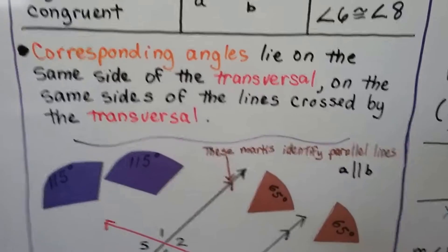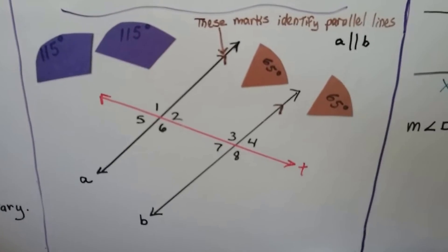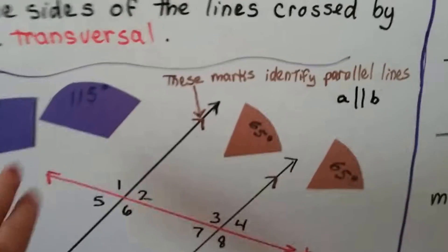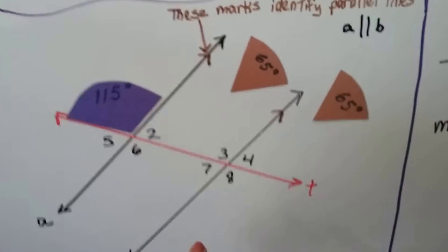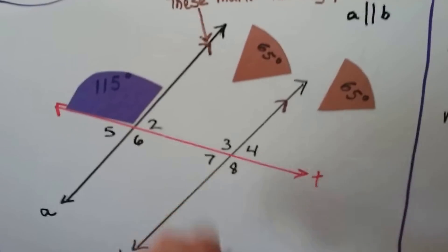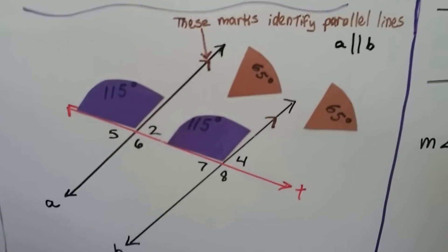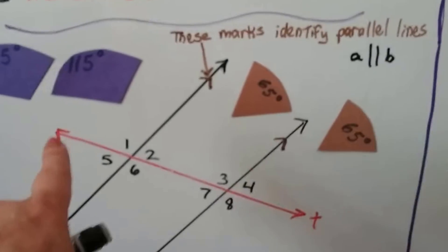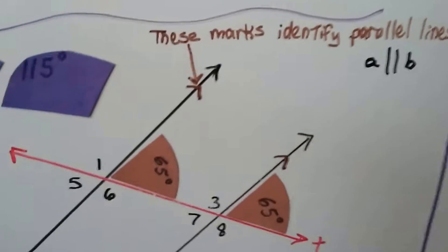Corresponding angles lie on the same side of the transversal, on the same sides of the lines crossed by the transversal. Looking at this diagram with some angle measures — if I take one of these blue angle measures and fit it into angle 1, I can take the other one because it's above the red transversal on the left side of line A, and place it above the transversal on the left side of line B. They're both 115 degrees. And 115 plus 65 equals 180 degrees, making them supplementary. So I can place the 65 degree angle here and here — those are corresponding angles.